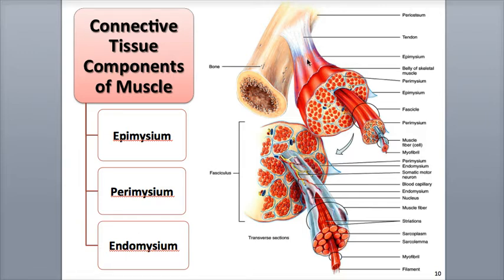The epimysium is the outermost external layer of dense irregular connective tissue, which surrounds the entire whole muscle. The perimysium is another layer of dense irregular connective tissue that surrounds groups of 10 to 100 muscle fibers gathered together into little bundles called fascicles. You've seen fascicles before if you've ever looked closely at a cut of meat like steak and seen its grain — those are the fascicles.